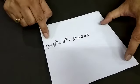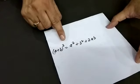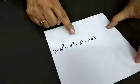In algebra, we know this formula: (a+b)² = a² + b² + 2ab.